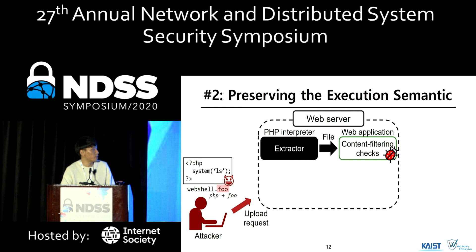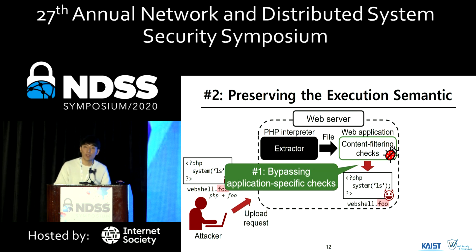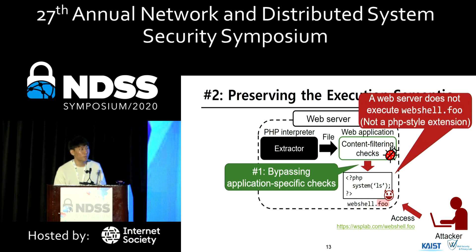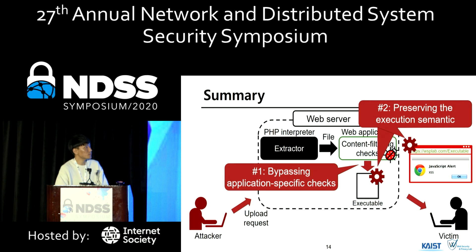This means that the execution semantics and constraints should be preserved in the execution environment. To clarify the second challenge, let's assume the attacker tries to upload a file with the weird extension .fu. This file can be uploaded to the web server according to the content filtering checks example, meaning she can bypass content filtering somehow. However, when she accesses this file via its URL, she cannot trigger execution on the web server because a PHP interpreter is only invoked for a PHP extension, and the web server does not preserve this execution semantic. So for successful remote code execution, the execution semantic of the uploaded file should be preserved in the execution environment. In summary, the challenges in finding UEFU vulnerabilities are bypassing application-specific checks and preserving the execution semantic.